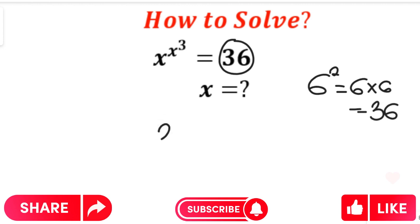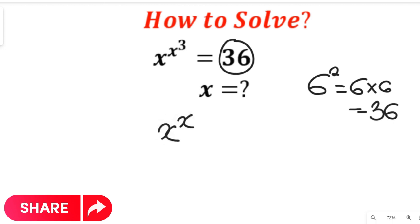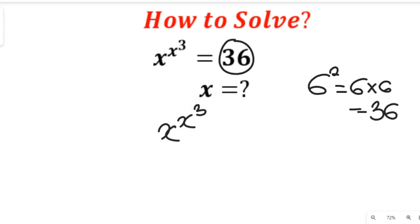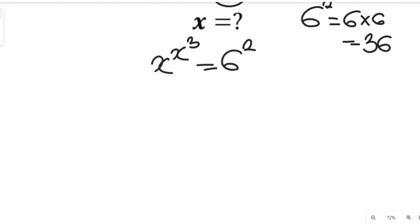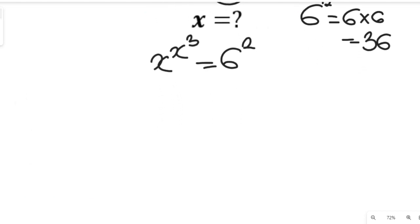With that in mind, we can expand 36. So this question will now give us x to the power of x to the power of 3, and this will be equal to 6 to the power of 2.